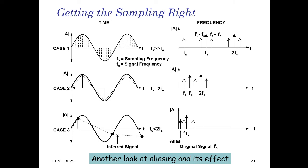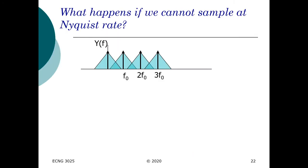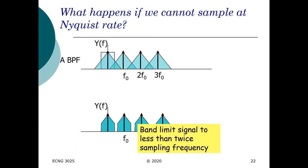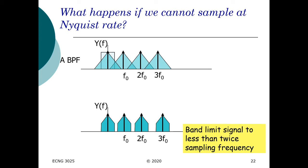If we cannot sample at the Nyquist rate, one way to mitigate this is using a bandpass filter. However, using the bandpass filter tends to truncate the signal as if we applied a window on it. We may get some of the important parts of the signal, but we lose some information in the process due to this improper sampling rate. The bandpass filter needs to be bandlimited to less than twice the sampling frequency in order to obtain this effect. So we need to pay attention to where the most important parts of the information in the frequency domain are and where we can sacrifice or truncate.